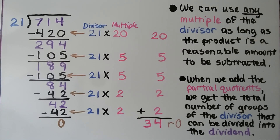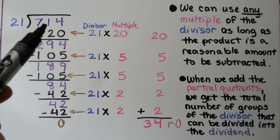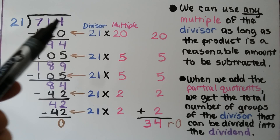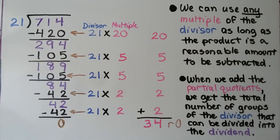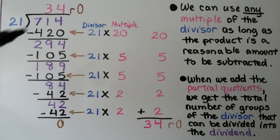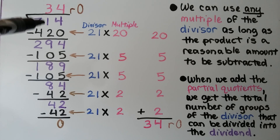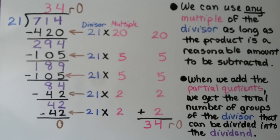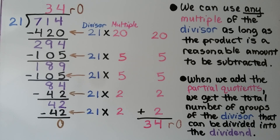Our quotient is 2 digits. We write it above the dividend so the ones place lines up and the tens place lines up. When we add the partial quotients, we get the total number of groups of the divisor that can be divided into the dividend.